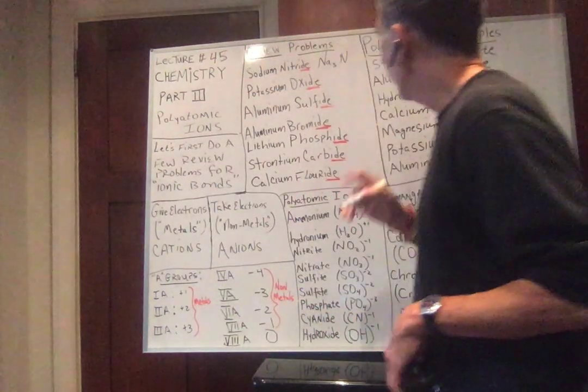Those were monatomic ions — one atom. Now we'll talk about polyatomic ions. First, we'll do a couple of cations. Ammonium: NH₄ has a charge of plus one. So ammonium is very much like the 1A group — it has a charge of plus one and wants to give away an electron. Hydronium: same thing. Hydronium is H₃O, and it wants to give up an electron.